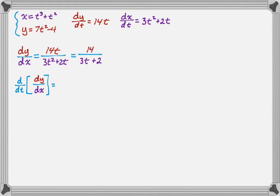And this is going to be, well, so there's a lot of ways you could figure this out. I'm going to rewrite dy dx first as 14 and then 3t plus 2 to the negative first. And now I'm going to kind of power rule, chain rule this.